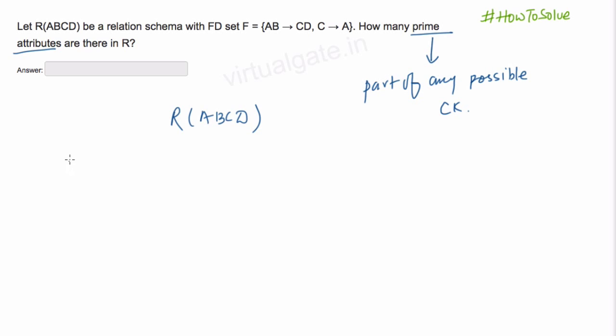To find out candidate key, we have functional dependency A, B determines C, D and C determines A. If you have watched my lecture, what we do is we start with attributes which are not present on the right-hand side, as it means that it cannot be determined using any other attribute. So we have to have that attribute present in our set of candidate keys.